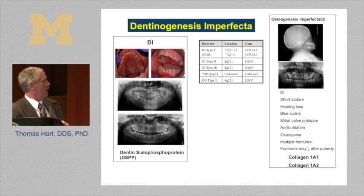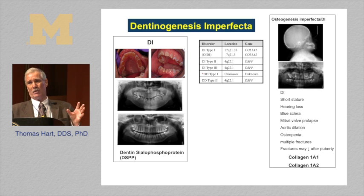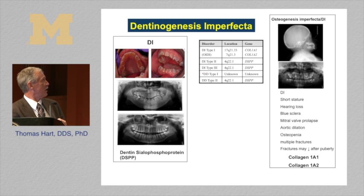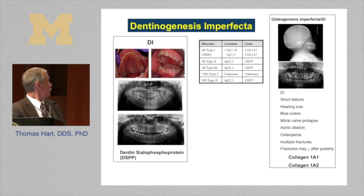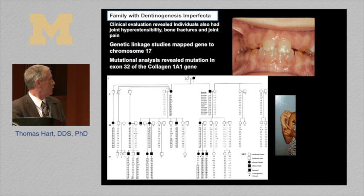Mutations of the dentin sialophosphoprotein (DSPP) gene code for a protein that is then split into two proteins functioning in dentin development and mineralization. Mutations of this gene cause isolated dentinogenesis imperfecta. However, mutations of collagen 1A1 and collagen 1A2, which are on two different chromosomes, can also cause DI. The collagen genes are large — over 50 exons each — and over 500 different mutations have been reported for each. The phenotypic findings can be very variable, from a very mild to a very severe, even lethal phenotype, and can include dentinogenesis imperfecta, short stature, hearing loss, blue sclera, mitral valve prolapse, cardiovascular problems, and bone fractures.